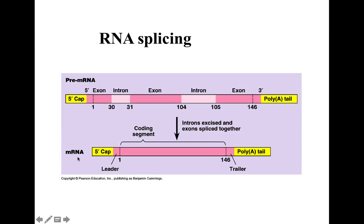The mature mRNA molecule would still contain the 5' cap and the 3' poly-A tail, along with the 5' UTR — the untranslated region, also known as the leader sequence — as well as the 3' UTR, also known as the trailer sequence. These are known as UTRs, the untranslated regions, because they do not get translated and are not part of the coding segment. The 5' UTR helps in capping and the 3' UTR helps in polyadenylation.